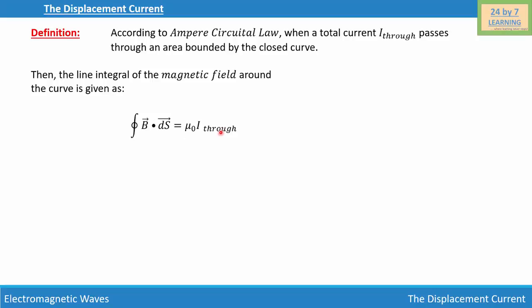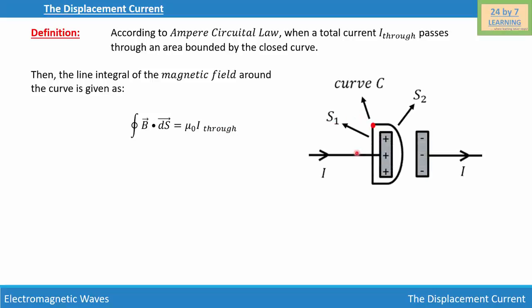In order to find the displacement current, I am going to consider a capacitor. This is my capacitor where you can see this is the positive plate and this is the negative plate, and let I amperes of current pass through the capacitor. We are drawing a surface here — let this be S1, this end be S2, and let this be curve C.